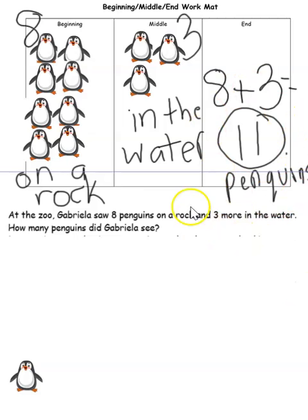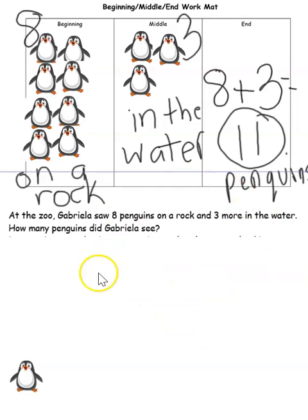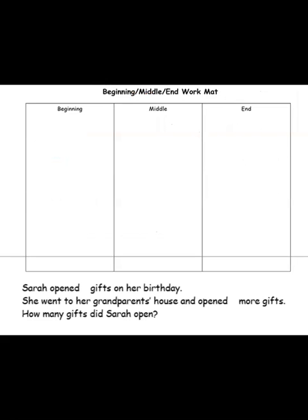That was some very good problem solving, and we used our Beginning, Middle, and End workmat to help us really think through a problem — what's happening at the beginning, the middle, and the end. Let's try one more. We have another problem to solve. Let's use our three reads to help us really understand the problem. Remember, the first read — I want you to imagine what is happening.